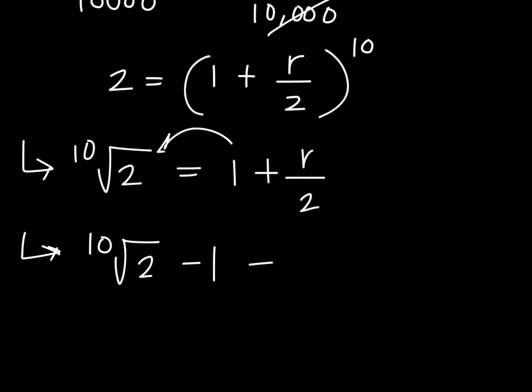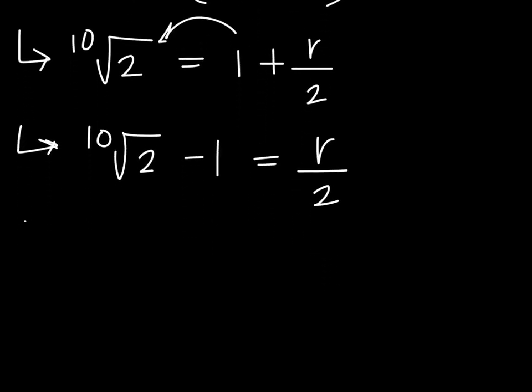Tenth root of 2 minus 1 equals R over 2. Finally, to get R, multiply both sides by 2, and that will give you 2 times (tenth root of 2 minus 1) equals R.